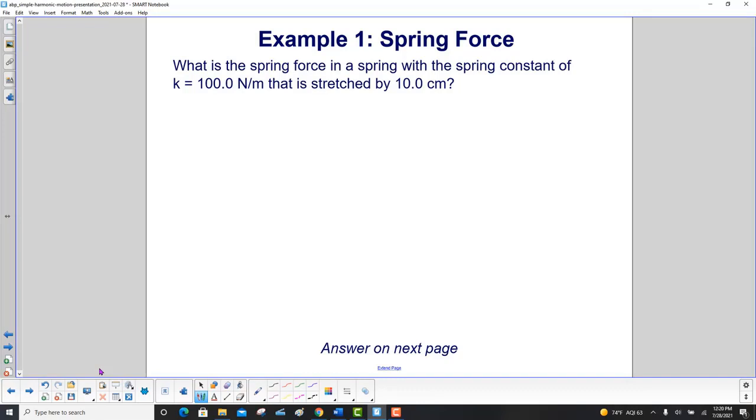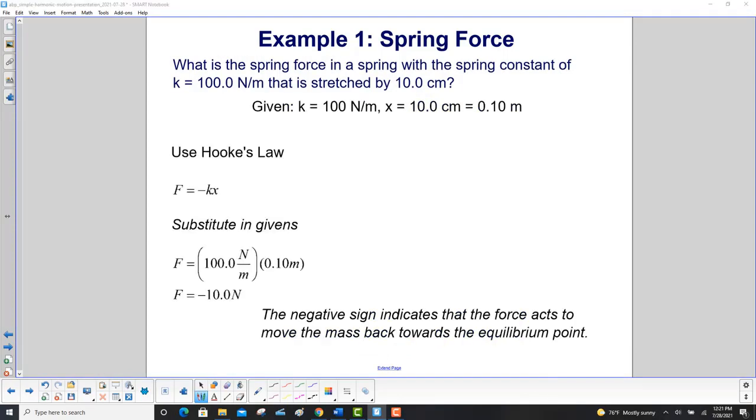What is the spring force in a spring with the spring constant k equals 100 newtons per meter that is stretched by 10 centimeters? The givens are spring constant is 110 newtons per meter. Be very careful, convert x to meters. So 10 centimeters is 0.10 meters. We'll use Hooke's law. F is equal to minus kx. Substitute in the givens, and we get the force of negative 10 newtons. The negative sign indicates that the force acts to move the mass back towards equilibrium point. That's what's known as a restorative force.